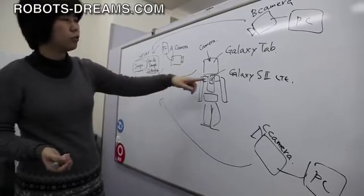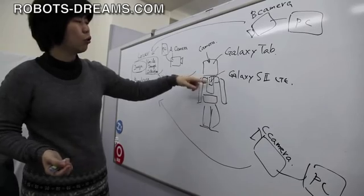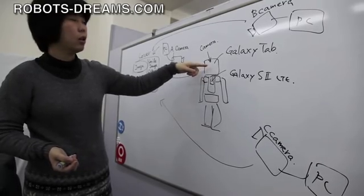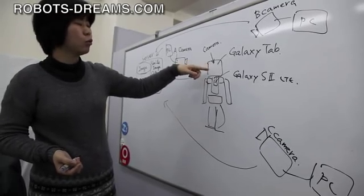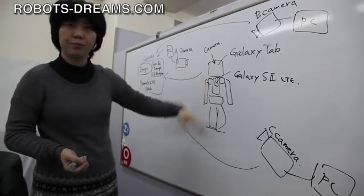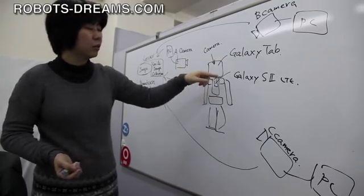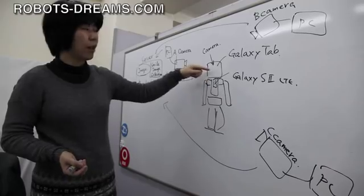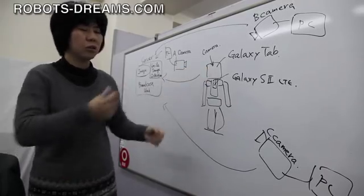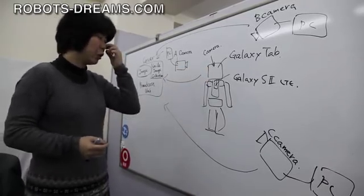In this system, the Galaxy has to send a command to the Galaxy Tab, and then the Galaxy Tab makes a motion command to the bodies. And the Galaxy has to send a command to dance, and this robot... like this. Christmas song dance.